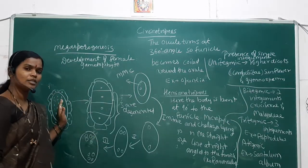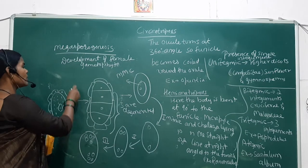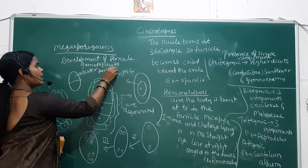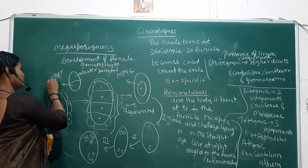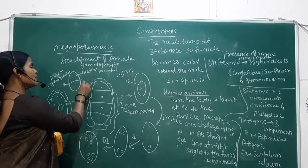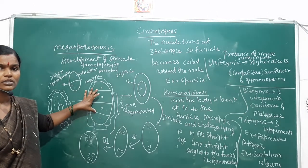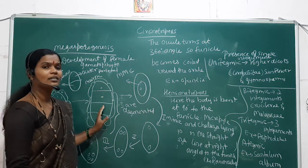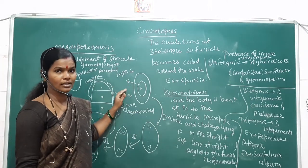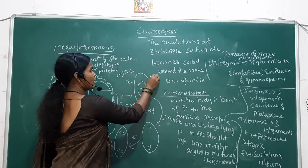The archesporial cell near the nucellar region undergoes periclinal division and produces two cells: the outer parietal cell and the inner sporogenous cell. The inner sporogenous cell undergoes meiotic division and produces four daughter cells. Among these four daughter cells — called the megaspore tetrad — three degenerate and one remains. That one remaining cell is the megaspore mother cell, and its development is called monosporic development.